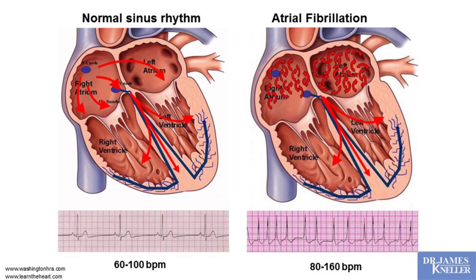In atrial fibrillation, there is very chaotic electrical activity in those top chambers — very much like a series of cyclones or hurricanes electrically. As a result, those chambers don't contract uniformly; they quiver or are in a standstill. The impulses bombard the lower chambers, causing the lower chambers to contract in a rapid and irregular fashion. Here we see a rhythm strip from a patient in atrial fibrillation, showing that grossly irregular pattern controlling the overall heart rate.